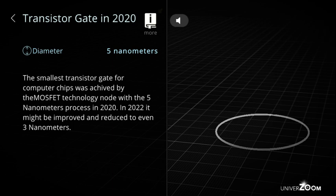Transistor gate in 2020, diameter: 5 nanometers. The smallest transistor gate for computer chips was achieved by the MOSFET technology node with the 5 nanometer process in 2020. In 2022 it might be improved and reduced to even 3 nanometers.